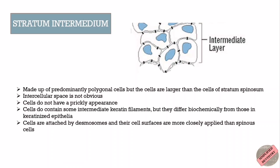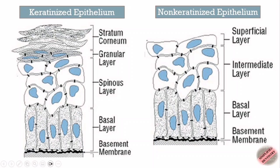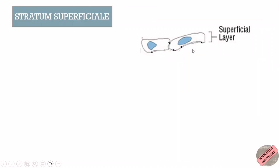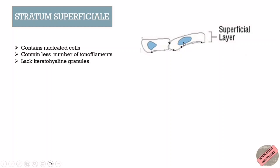Another difference is that in non-keratinized epithelium there is no stratum granulosum, nor is there a stratum corneum, although sometimes incomplete or vestigial granules of stratum granulosum may form. The topmost layer is stratum superficiale, which contains nucleated cells that have fewer tonofilaments and lack keratohyaline granules. The cells of stratum superficiale also desquamate as non-cornified squamae.